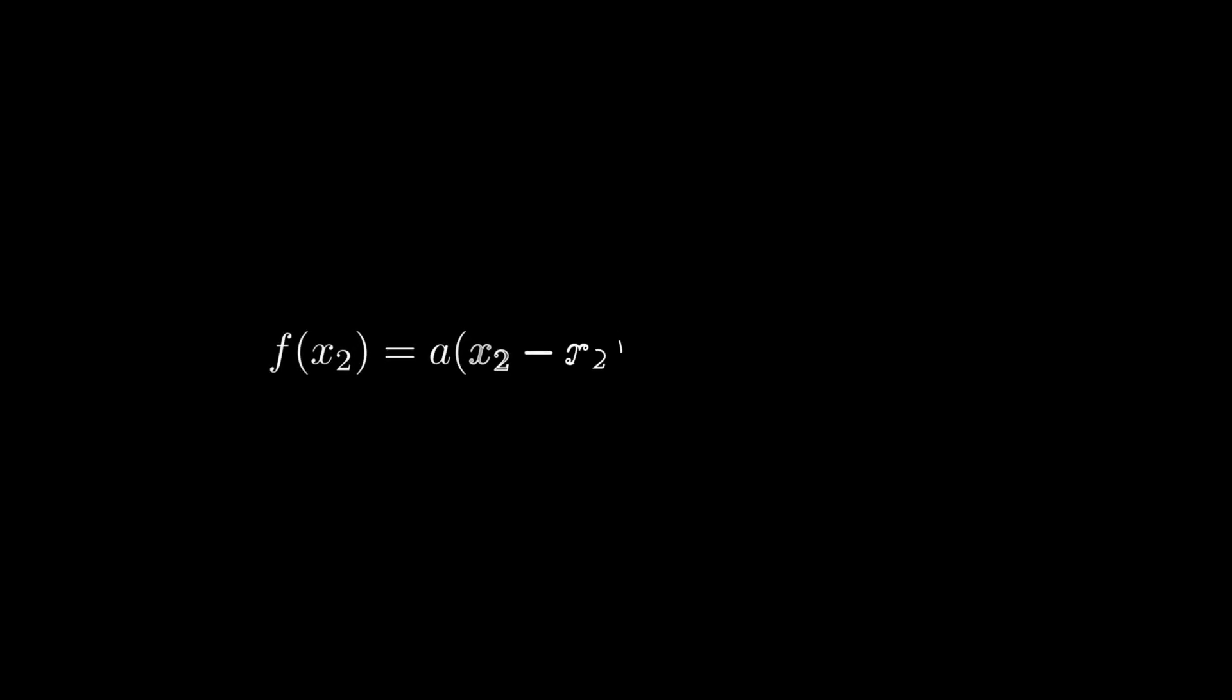Because two of the terms in the third equation are zero, it can be solved for c equals f of x sub 2, then substitute f of x sub 2 in place of c and rearrange the first two equations as follows.